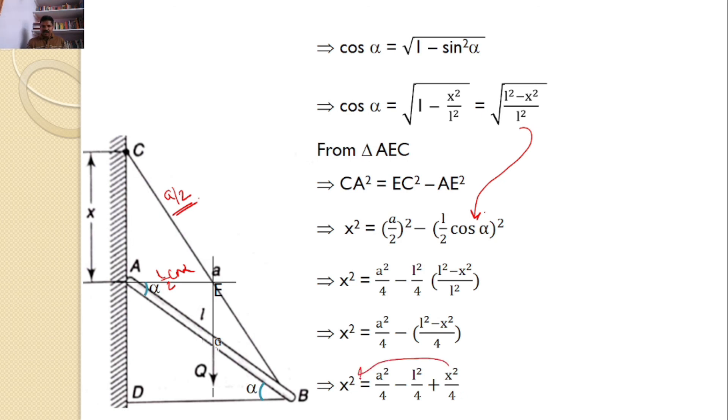So you can send this x square towards this side. Then you will get x square minus x square by 4 is equal to 3x square by 4 is equal to a square by 4 minus L square by 4. Four I can cancel out throughout. Hence, I can find x is equal to square root of a square minus L square by 3, which is the answer for the given problem.